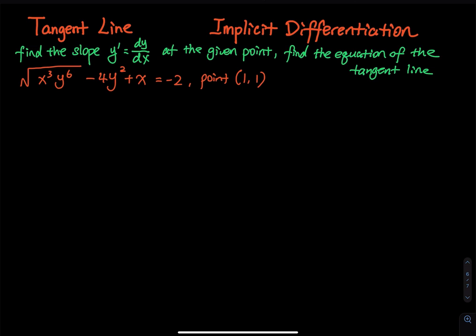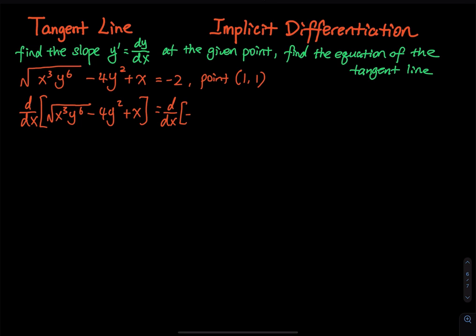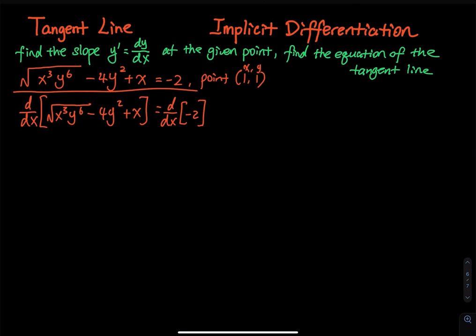Let's get started. First we differentiate both sides: d/dx of x³y⁶ minus 4y² plus x, and d/dx of negative two. The point is (1, 1), so we have x-coordinate one and y-coordinate one. If you let x equal one and y equal one, the left-hand side equals the right-hand side — that verifies the point lies on the curve.